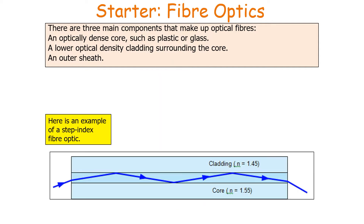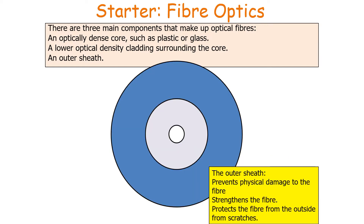In a step index fibre optic, the cladding has a smaller refractive index than the core. The outer sheath will prevent physical damage to the fibre, give the fibre strength, and protect the fibre from outside scratches.